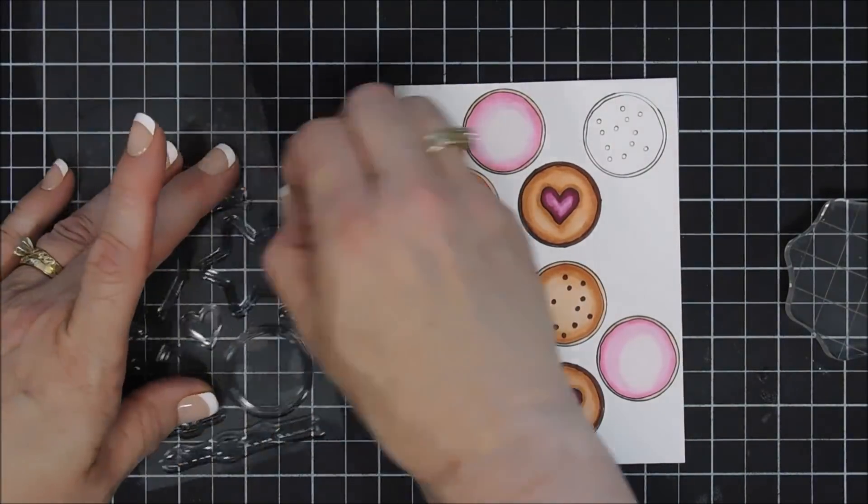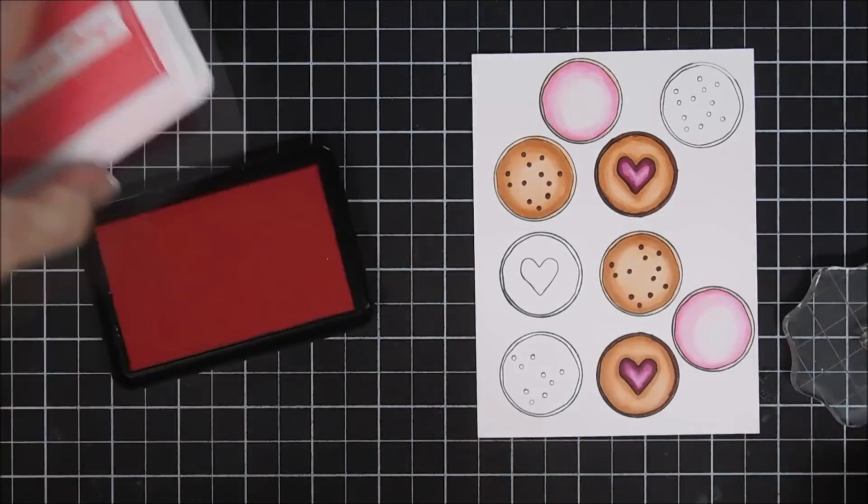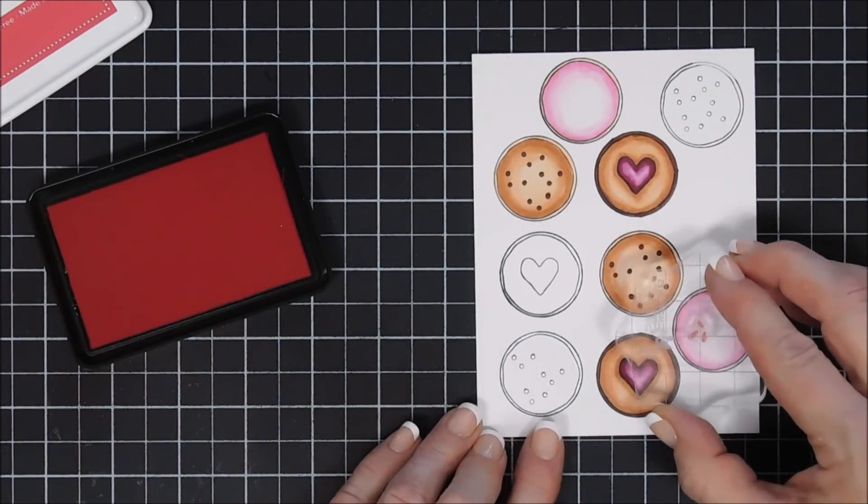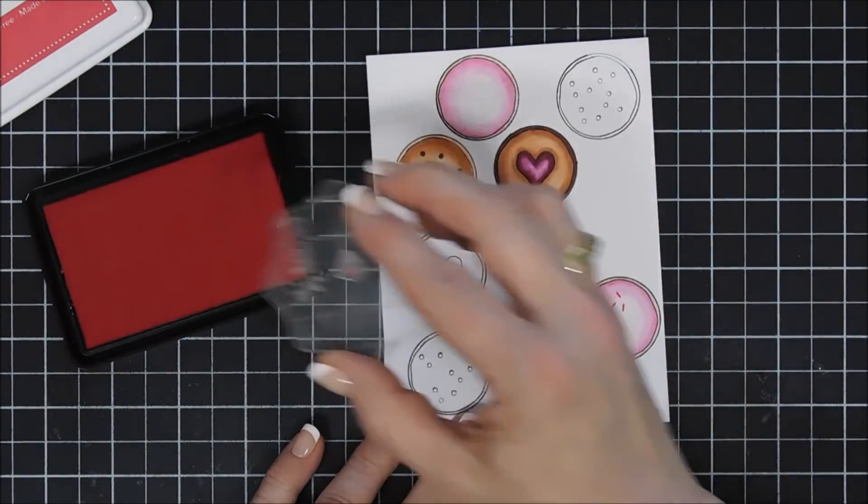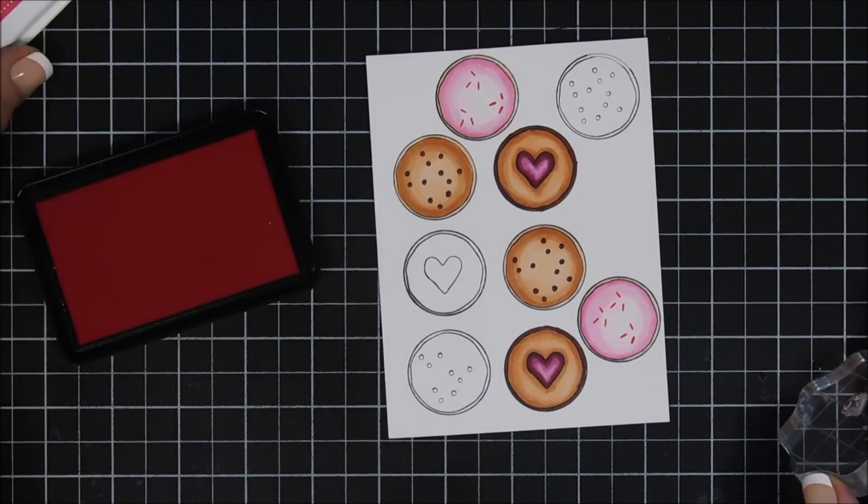Okay, coloring is all done. Now we're going to add our little sprinkles, so I'm going to use a few of my MFT inks. The first one is Red Hot, and I'm going to add a few little pinkish-reddish sprinkles to my two solid cookies here.